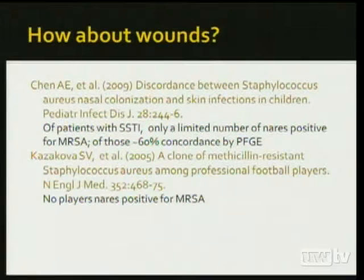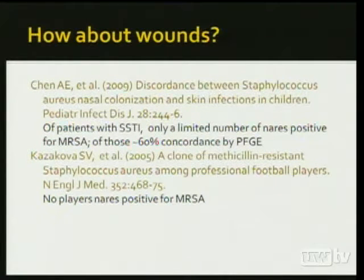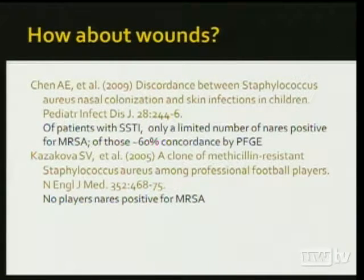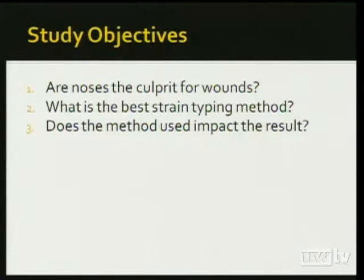The Chen paper looked at an outbreak in kids with skin and soft tissue infection — only a limited number were nares positive for MRSA, but 60% of those were concordant by pulse field. A paper on the professional football players — the Rams group — found none were nares positive for MRSA. So the available data doesn't give us a good indication. Our study objectives were to ask whether noses were the culprit for wounds, and whether we could make that conclusion with available methods. What are the best strain typing methods for Staph aureus, and does the method chosen impact the result?